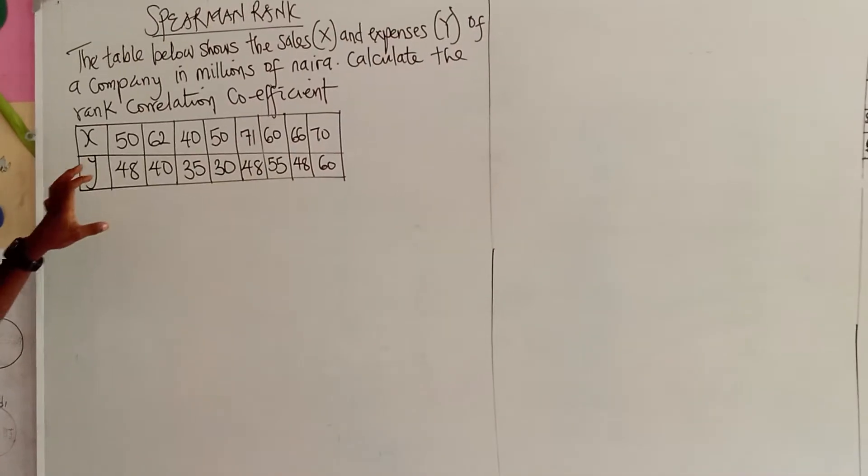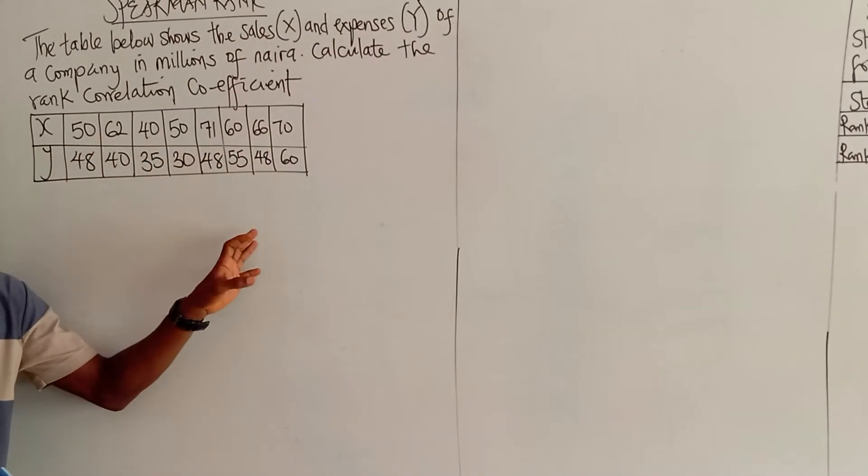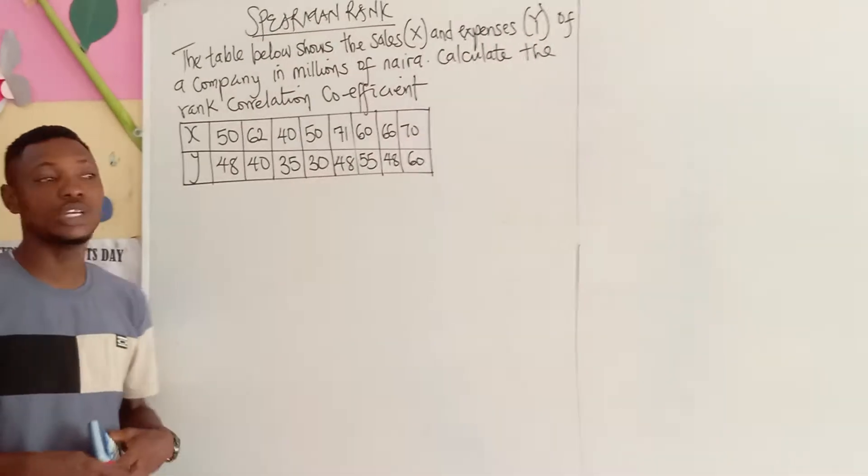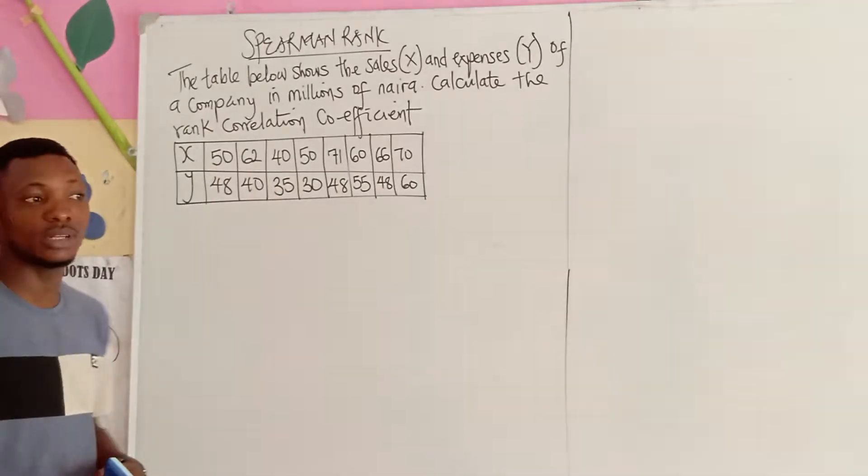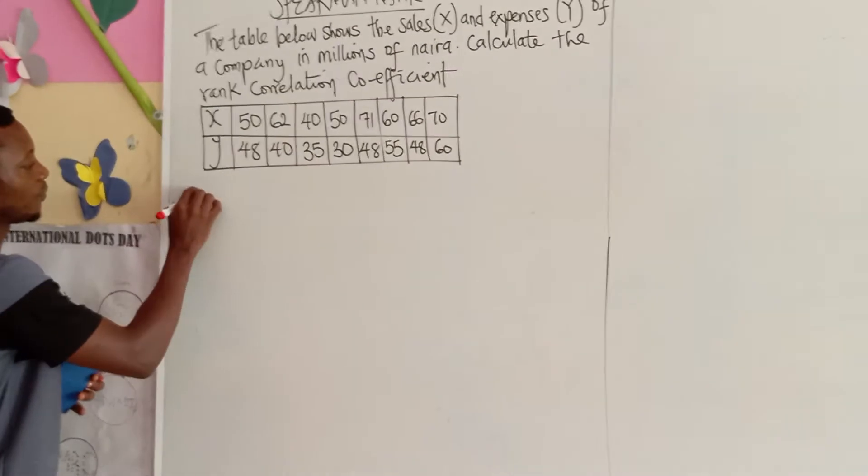Now, what they have given us is a total of the sales and a total of the expenses, but it has not been ranked. Now, the first thing that is demanded of you is to rank all of these figures that you've seen here. Now, how do we rank?